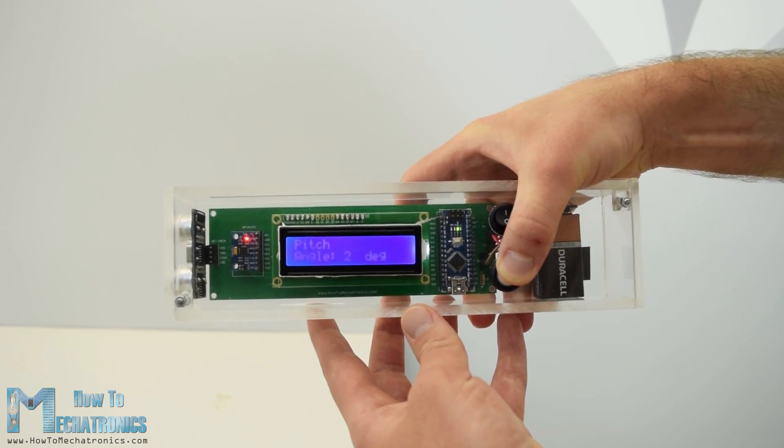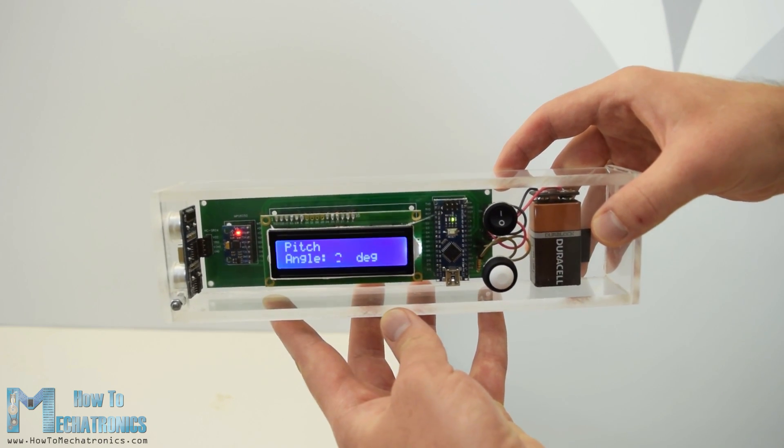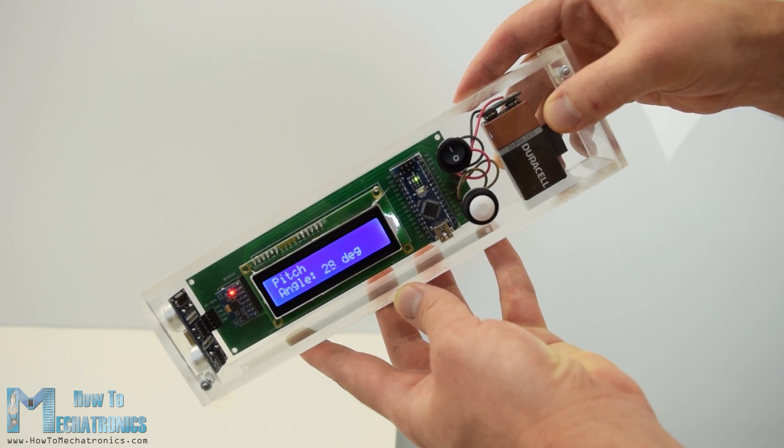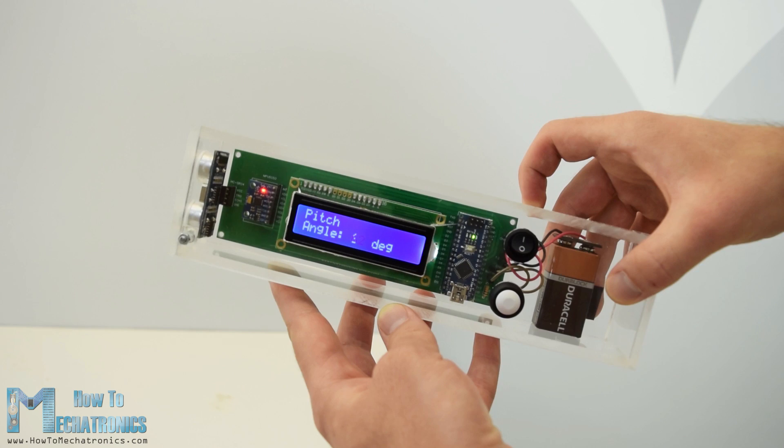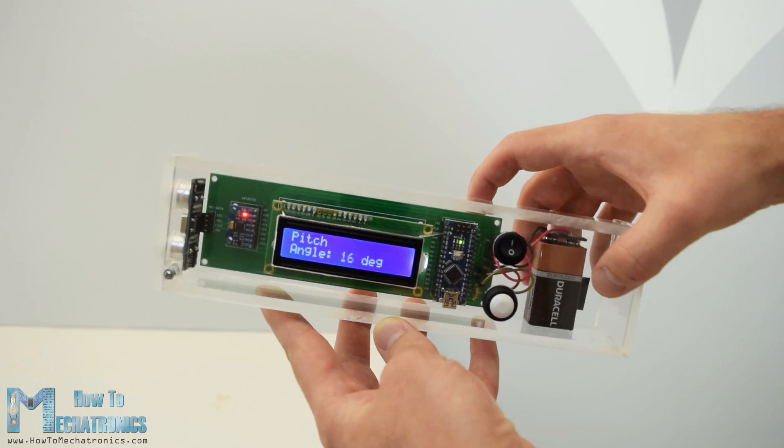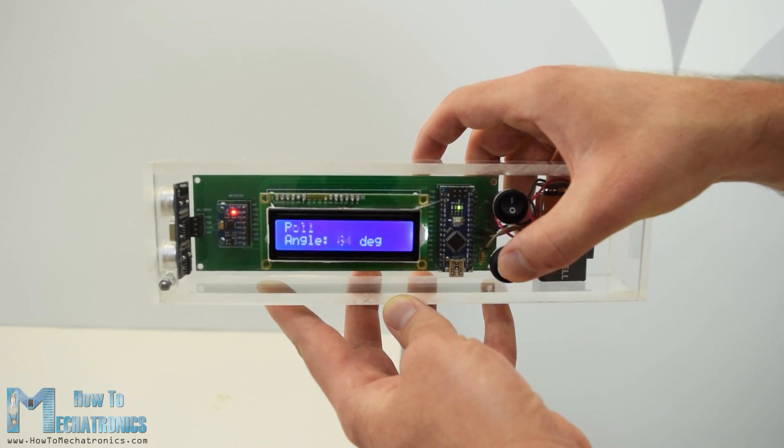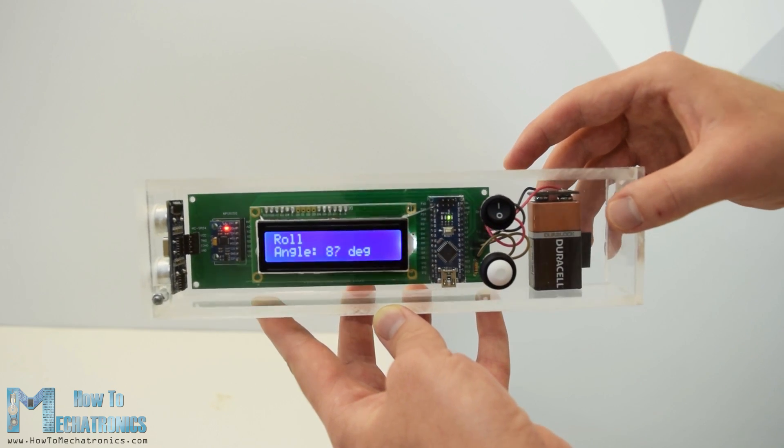The next program is the digital spirit level, where we can measure the angle with respect to the ground. Using the button we can toggle between the two axes, measuring either the pitch or the roll.